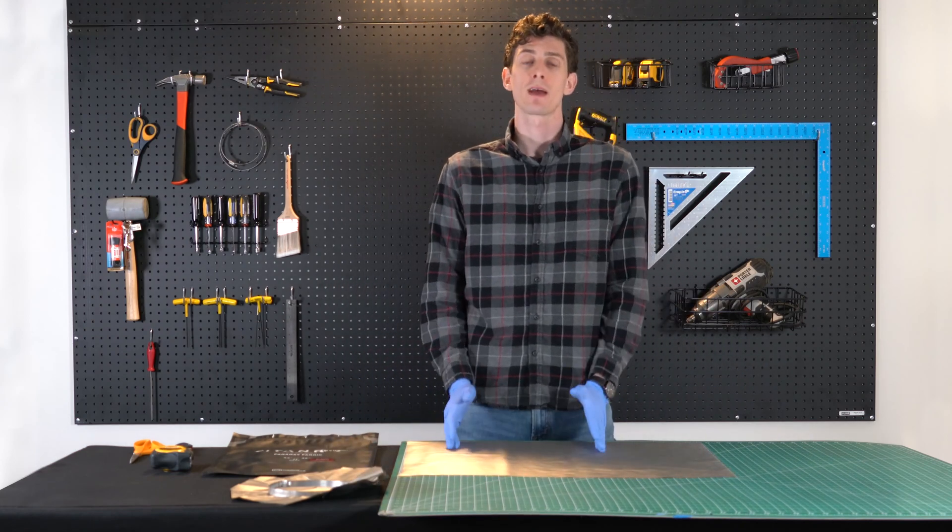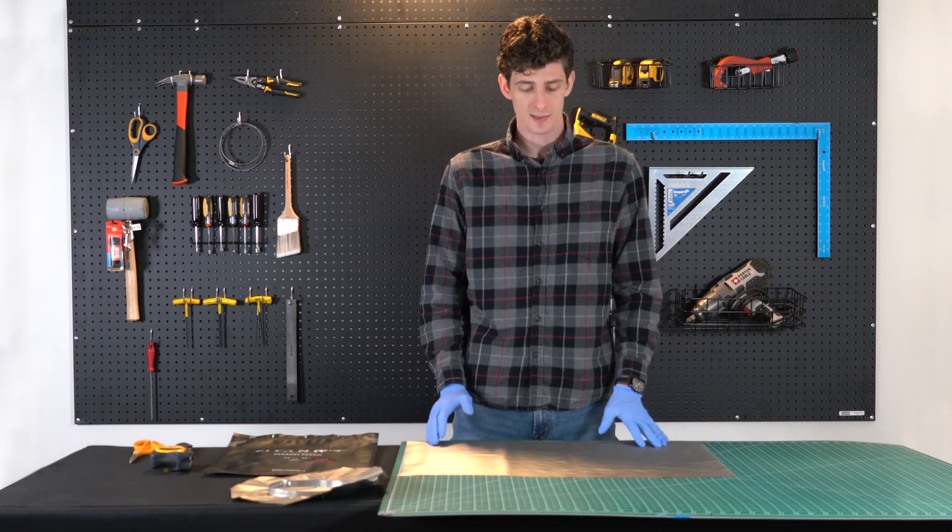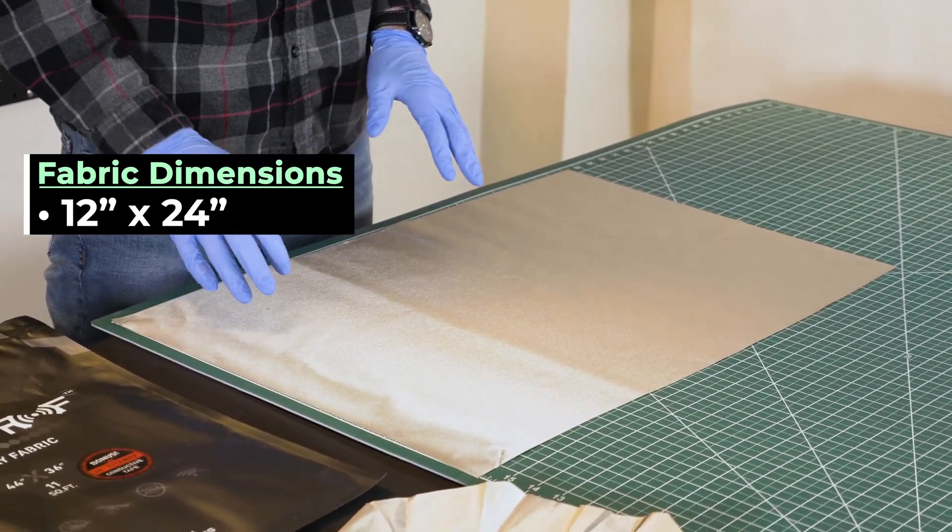Alright, so once we have our Faraday fabric out on the table, you want to cut it to approximately 12 inches by 24 inches.